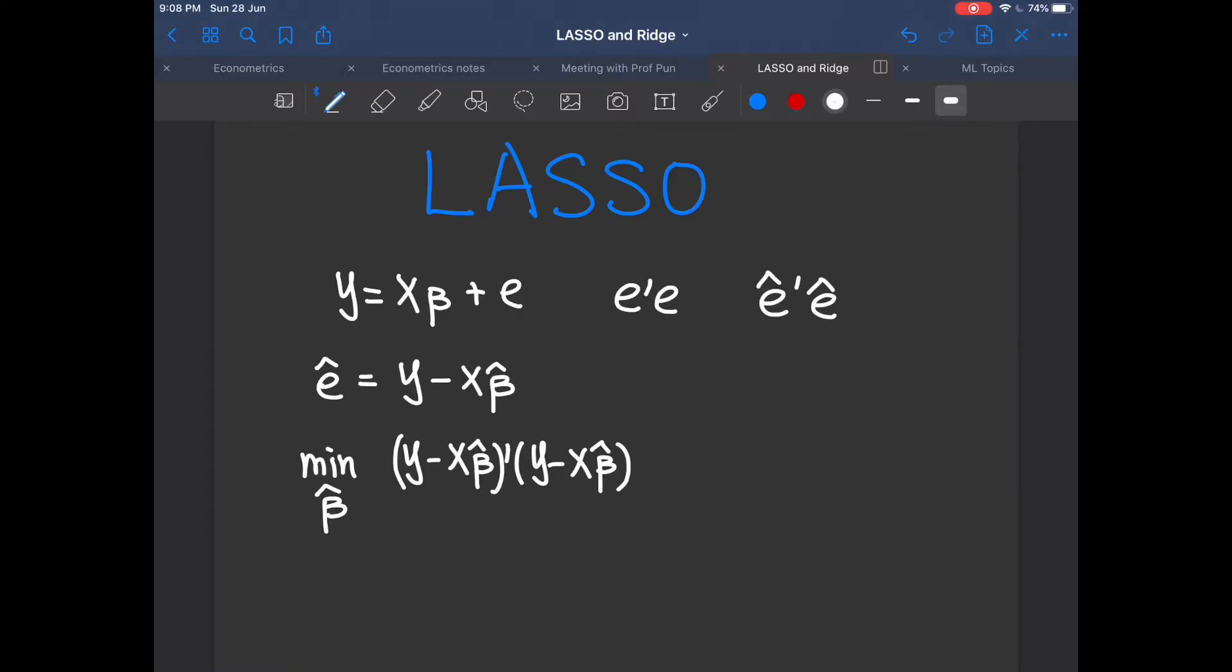The Lasso estimator simply modifies this objective function by adding the term of the L1 norm or the absolute value of beta hat and multiply it to a positive real number lambda. The formulation of Lasso corresponds to the Lagrangian of the following constraint optimization problem, which is minimize y minus x beta hat transpose multiply y minus x beta hat with respect to beta hat, subject to a constraint on the L1 norm or the absolute value of beta hat, which is smaller or equals to t.